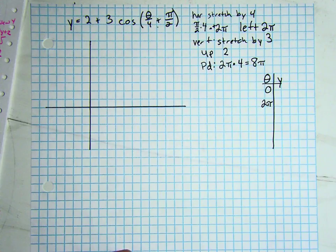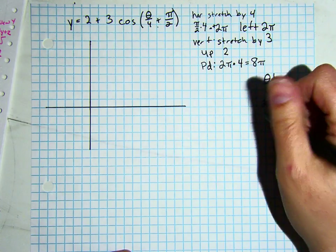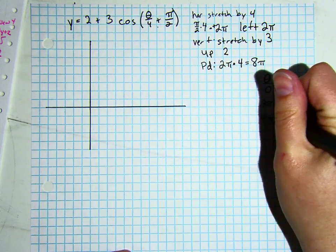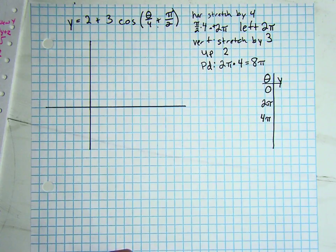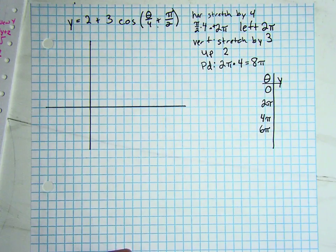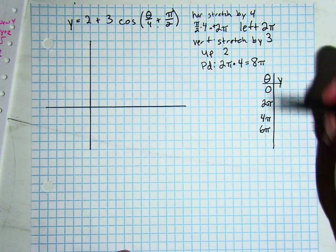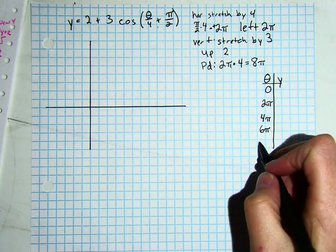Our next important point is at pi, so pi times 4 is going to be 4 pi. Our next important point is at 3 pi over 2, 3 pi over 2 times 4 is 6 pi. And our last important point is at 2 pi. So 2 pi times 4 is 8 pi.